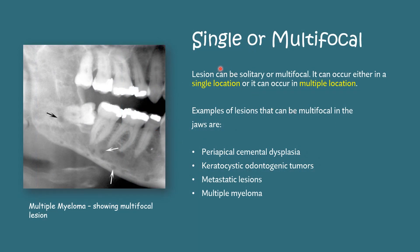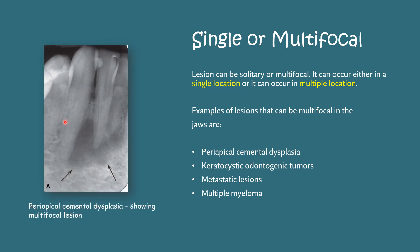Single or multifocal: we must check whether the lesion is single or multifocal — whether it is localized at only one place in the jaw or at multiple places. For example, periapical cemental dysplasia, keratocystic odontogenic tumour, metastatic lesion, and multiple myeloma can all be multifocal. This is a picture of multiple myeloma showing multifocal lesions. Another image shows periapical cemental dysplasia with a multifocal presentation — you can see three separate focal areas.